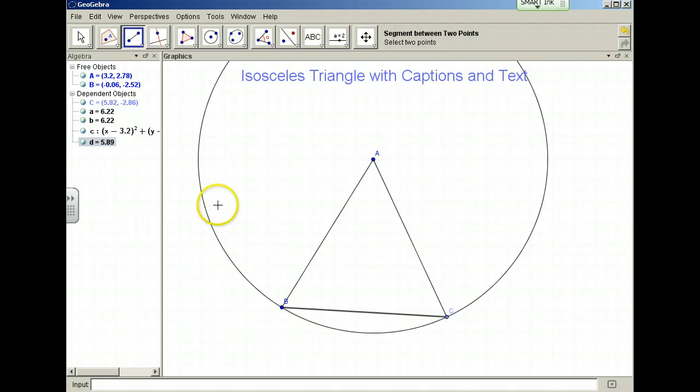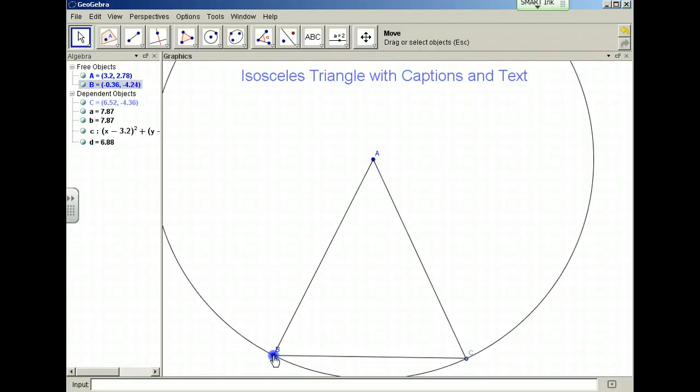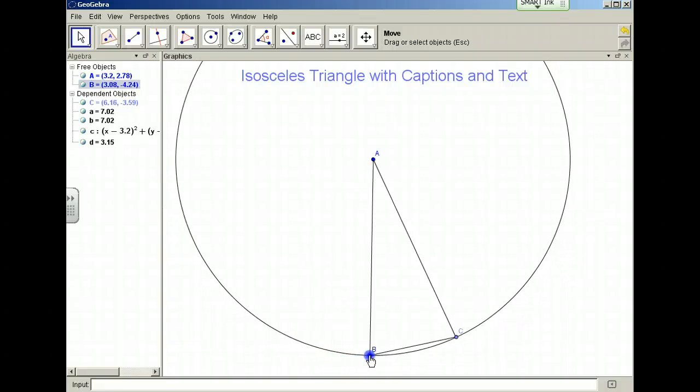My isosceles triangle is dynamic. I can make the circle larger and make a taller isosceles triangle, or if I bring B closer to C, I can make a narrow isosceles triangle.